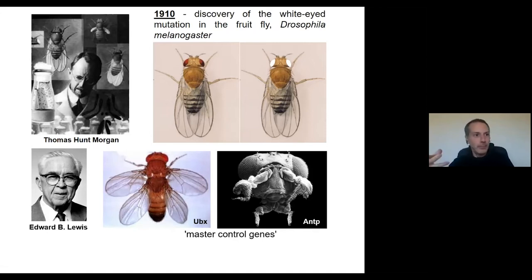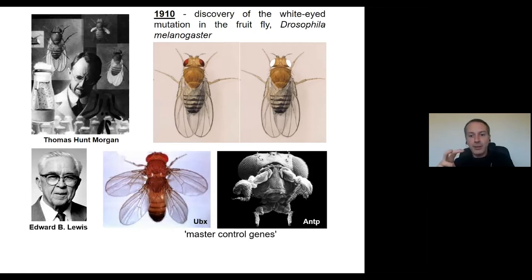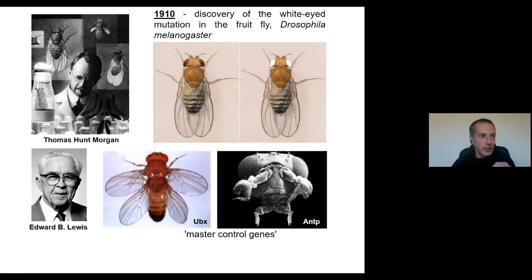This was a quantum jump in understanding the code. Basically, there are genes that are extremely important as master control genes that will give the identity of certain segments — of the organs of the organism.